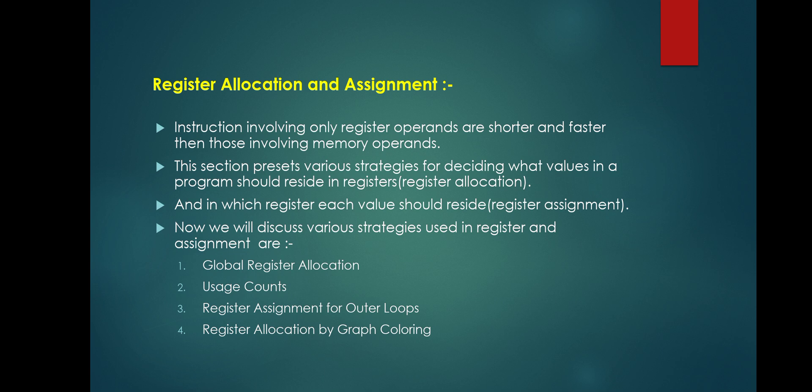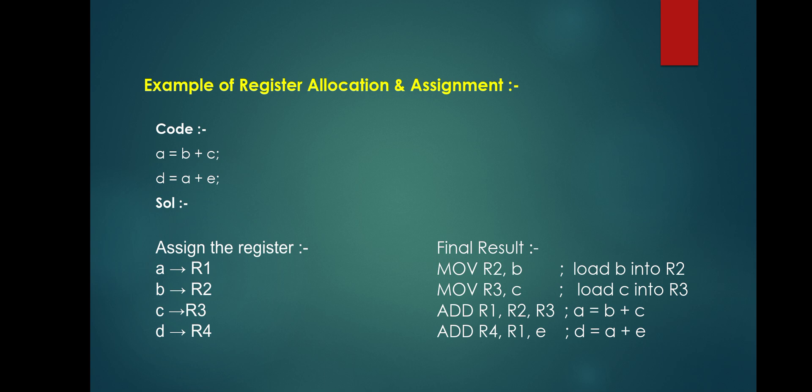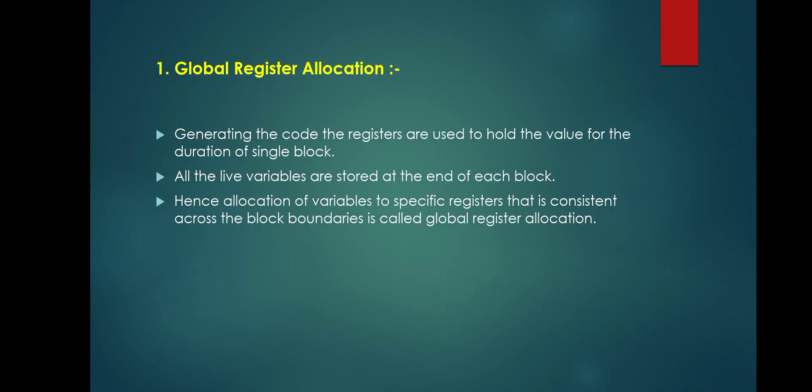There are various types of strategies used in register allocation and assignment: global register allocation, usage count, register assignment for outer loops, and register allocation by graph coloring. Global register allocation generates code for registers and holds values for the duration of a single block only.